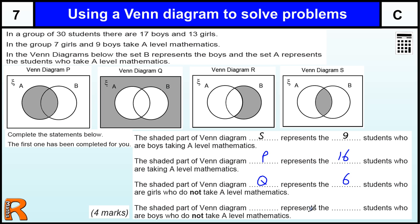The shaded part of the diagram represents students who are boys who do not take A level maths, so we're only left with Diagram R. Boys not taking A level maths—that's clear because they're in the boys section but not in A. The boys not taking A level maths are seventeen take away nine, which is eight.